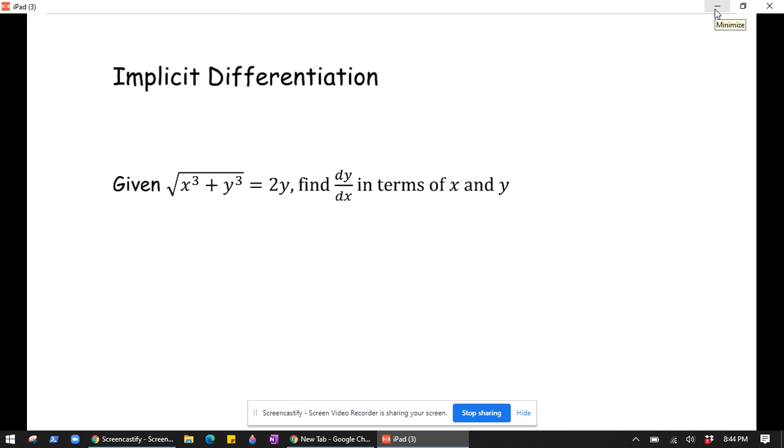All right, in this video we're going to tackle kind of a nasty implicit differentiation problem. So we've got the square root of x cubed plus y cubed equals 2y. You have to find dy/dx in terms of x and y.